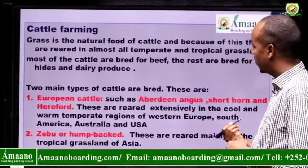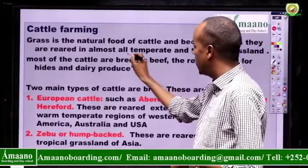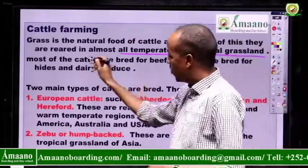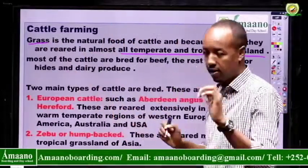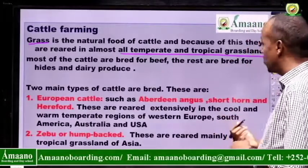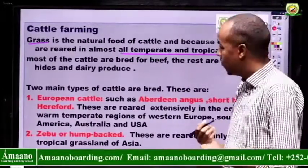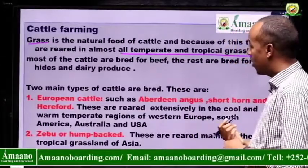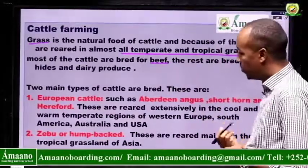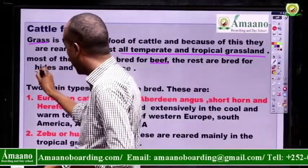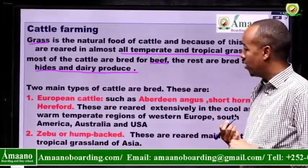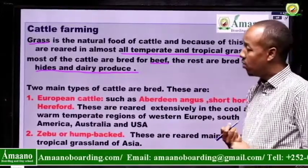Grass is the natural food of cattle. Because of this, they are reared in almost all temperate and tropical grasslands. Wherever grass is available, cattle can be reared. Most of the cattle are bred for beef — the meat of the cattle is called beef. The rest are for dairy and for hides. These are the three objectives: cattle are mostly bred for beef, for skin or hide, and for dairy.